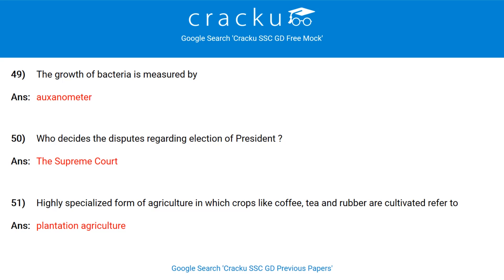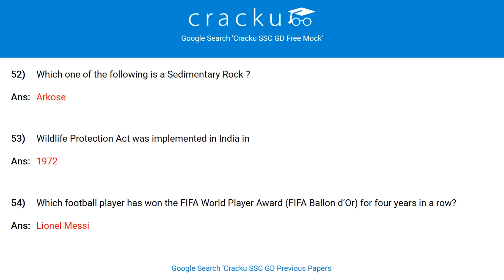The West to East extension of the Himalayas is from Indus Gorge to Brahmaputra Gorge. The growth of bacteria is measured by auxanometer. Who decides the disputes regarding election of president? The Supreme Court. Highly specialized form of agriculture in which crops like coffee, tea and rubber are cultivated refers to plantation agriculture. Which is a sedimentary rock? Arkose. Wildlife Protection Act was implemented in India in 1972.